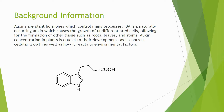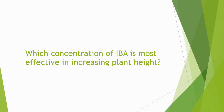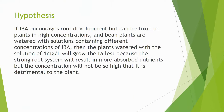With all this information, I asked myself: which concentration of IBA is most effective in increasing plant height? I hypothesized that if IBA encourages root development but is toxic to plants in high concentrations, and bean plants are watered with solutions containing different concentrations of IBA, then the plants watered with a solution of 1 mg per liter will grow the tallest, because the stronger root system will result in more absorbed nutrients but the concentration will not be so high that it is detrimental to the plant.